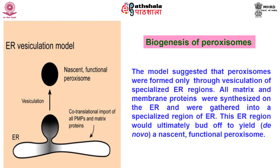Peroxisome biogenesis includes various processes like peroxisome membrane formation, import of matrix proteins, and proliferation and inheritance of the organelle. Proteins responsible for biogenesis of peroxisomes are called peroxins or pex proteins, and they are translated in the cytoplasm.